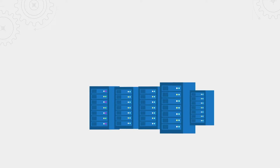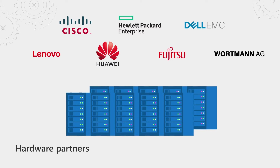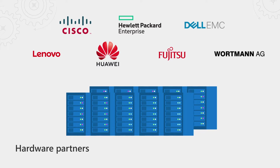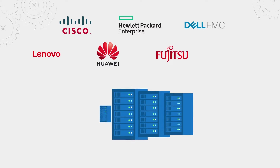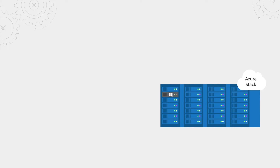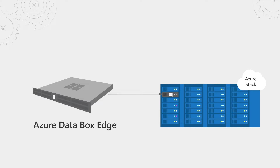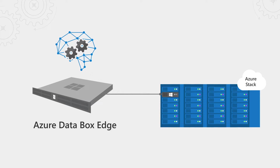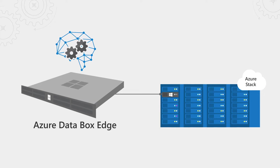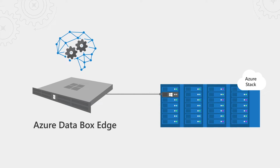How do people acquire Azure Stack? These integrated systems are built by several hardware partners, including Cisco, HPE, Dell EMC, Lenovo, Huawei, Fujitsu, and Wortmann. In addition to Azure Stack, you can also use Data Box Edge, a device that complements Azure Stack with specialized AI inference and data tiering. Azure Stack and Data Box Edge work together to bring you the power of Azure in your data center.